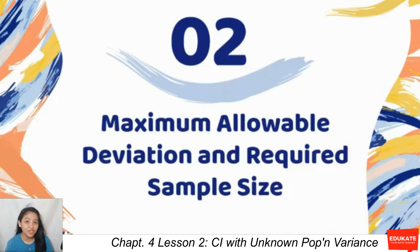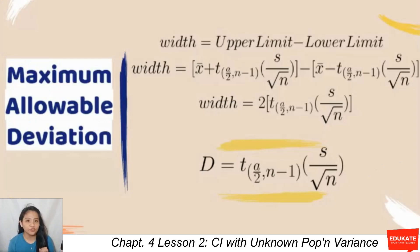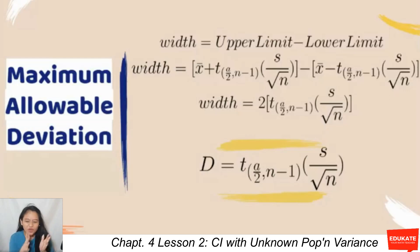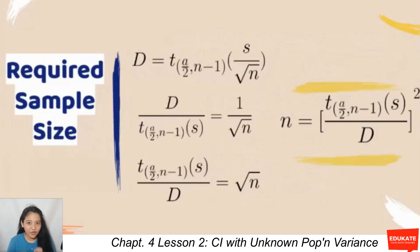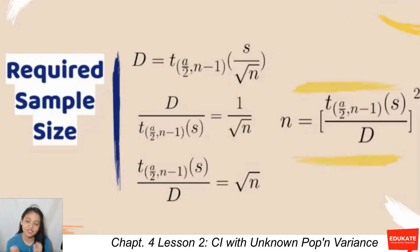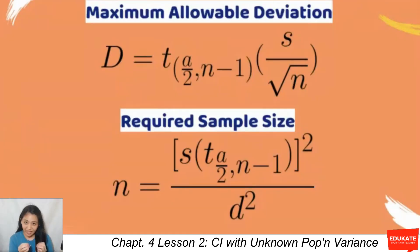Moving to maximum allowable deviation and required sample size when the population variance is unknown: the maximum allowable deviation D is computed as the upper limit minus the lower limit divided by 2, which is half the width of the interval. For the required sample size, starting from the formula t times S over D equals the square root of n, squaring both sides gives n equals the quantity (t times S over D) squared.